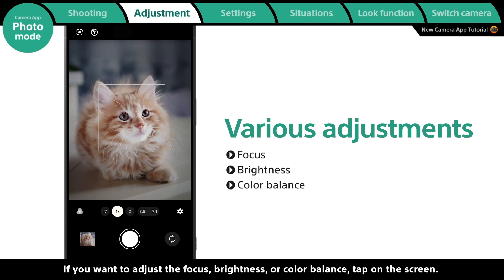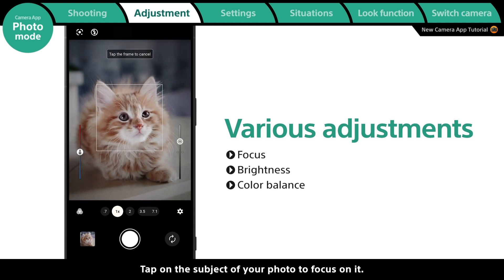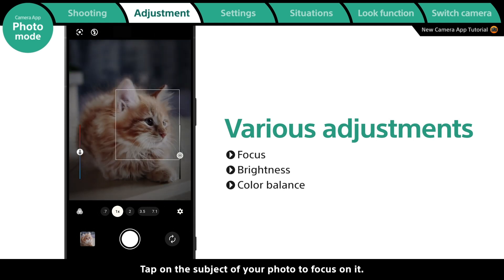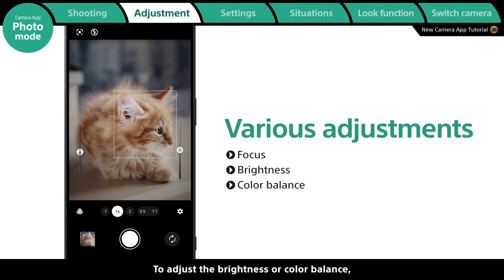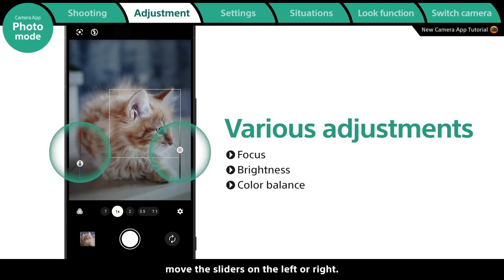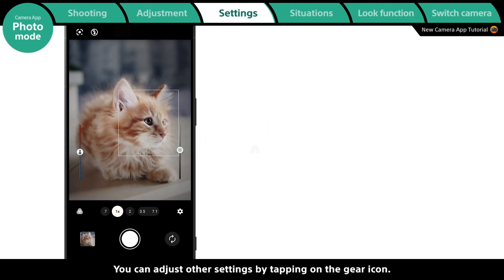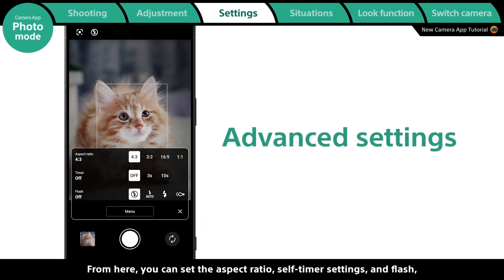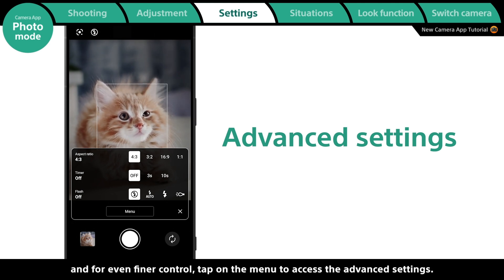If you want to adjust the focus, brightness, or color balance, tap on the screen. Tap on the subject of your photo to focus on it. To adjust the brightness or color balance, move the sliders on the left or right. You can adjust other settings by tapping on the gear icon, from which you can set the aspect ratio, self-timer settings, and flash.